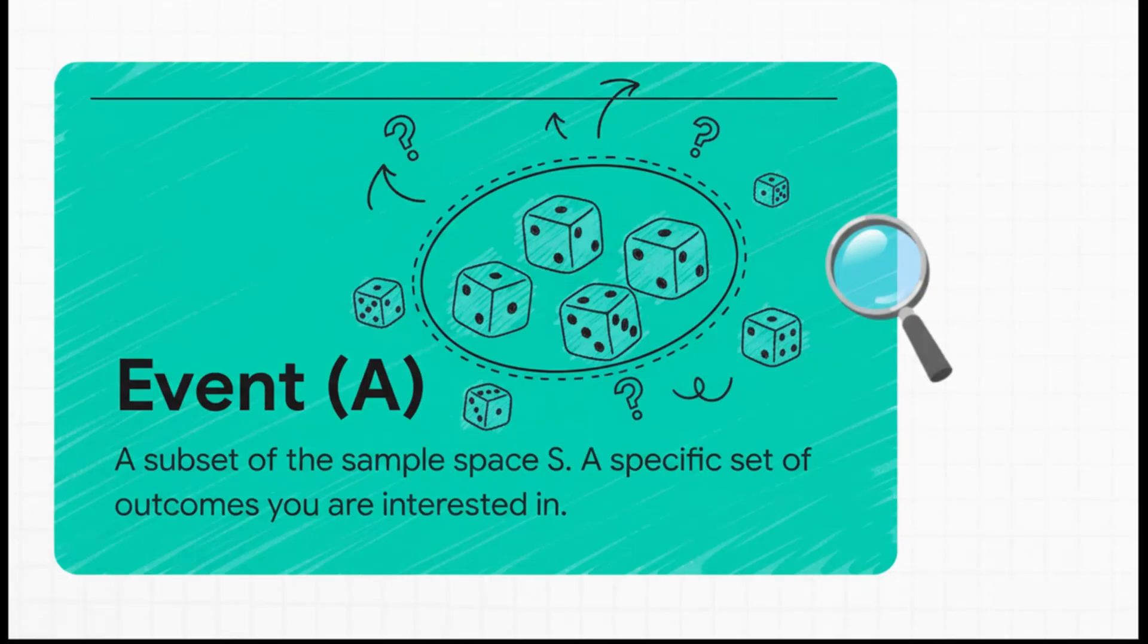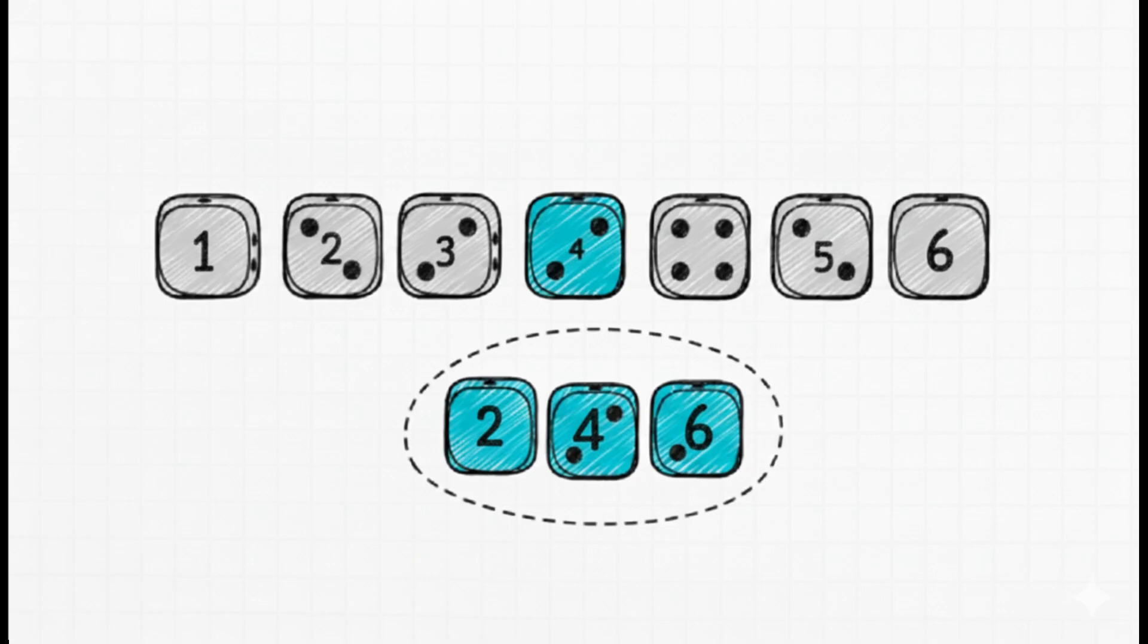Now, most of the time, we aren't interested in all the outcomes at once. We usually care about something more specific. And in probability, we call that specific thing an event. An event is really just a piece of the sample space, a certain outcome or group of outcomes that we want to focus on. It's our target. So for instance, let's say we want to know the chances of rolling an even number. Well, our event, we can just call it A for short, would be the outcomes 2, 4, 6. You see how that's just a smaller selection from our total sample space? That's an event.